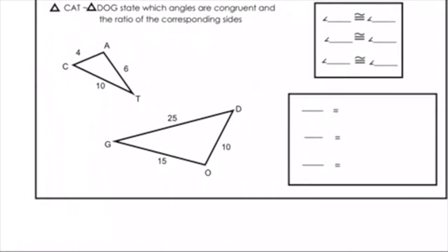Problem number one: let's get used to matching up the corresponding angles and corresponding sides. Triangle CAT is similar to triangle DOG. State which angles are congruent and the ratio of the corresponding sides. Which angles are congruent? We just match up our letters: C is congruent to D, A is congruent to O, and T is congruent to G.